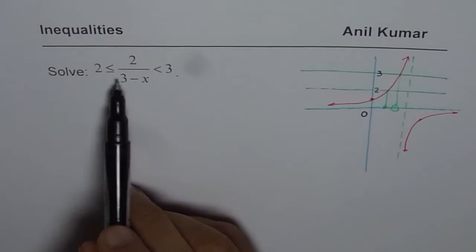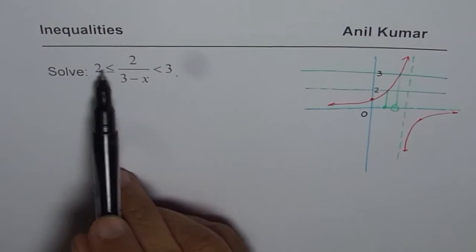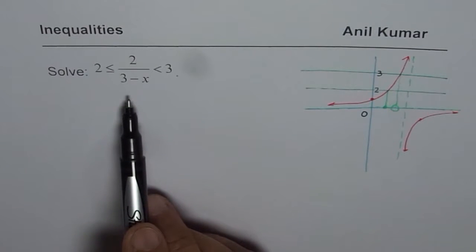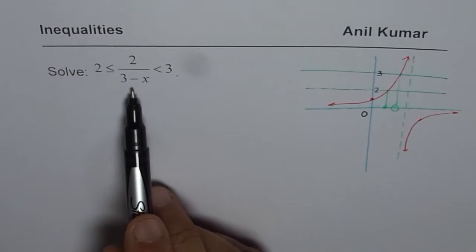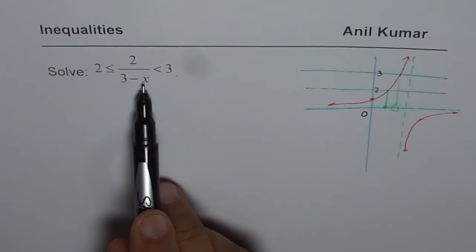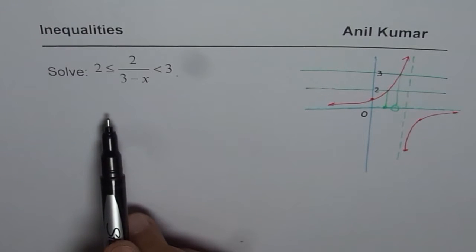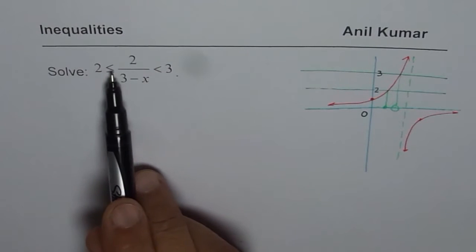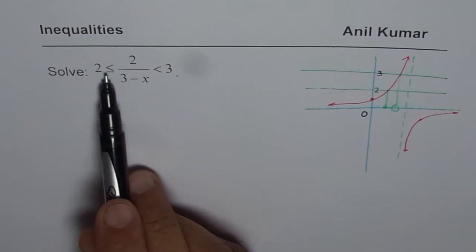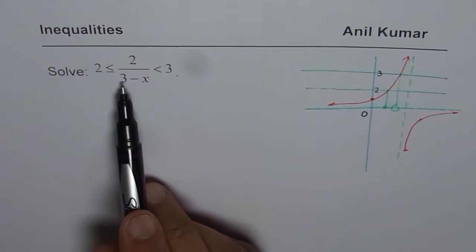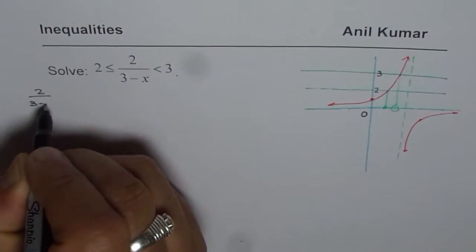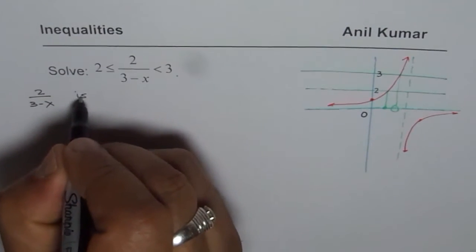To solve this algebraically, we need to multiply by (3−x). However, we are not sure whether (3−x) is positive or negative, so we don't know how to change these inequality signs. To handle this ambiguity, we observe that 2/(3−x) is between 2 and 3, so it is positive.